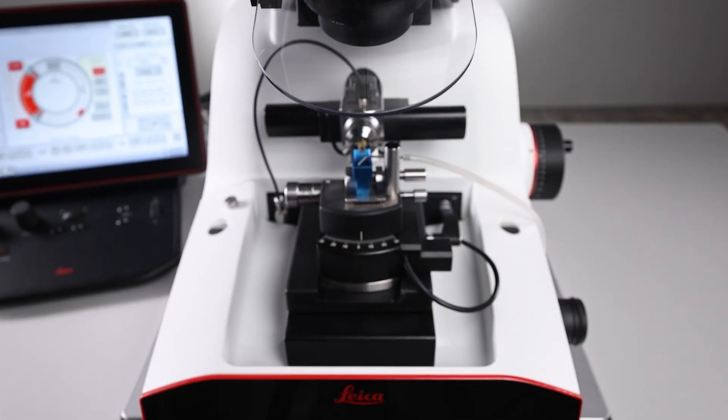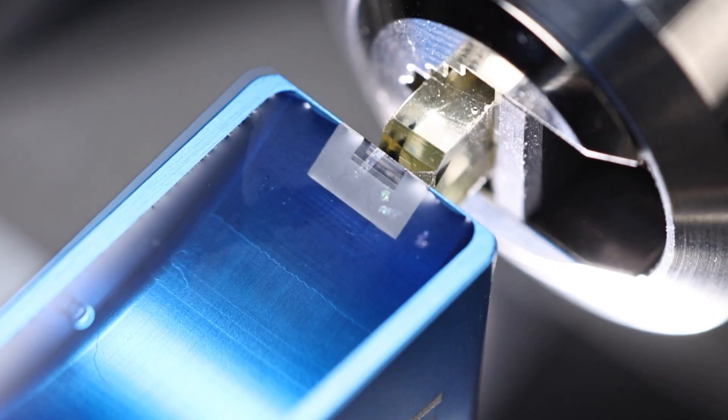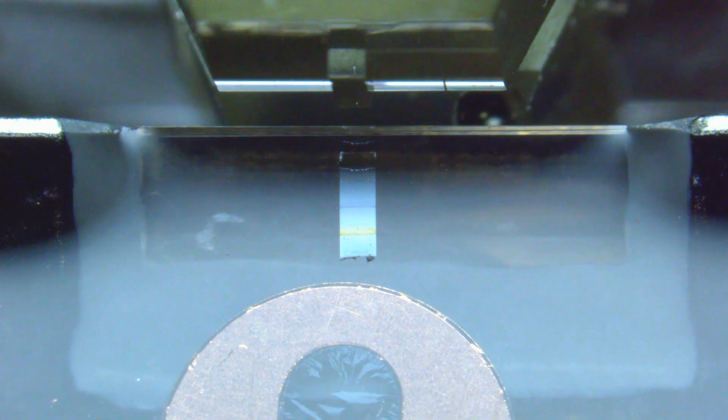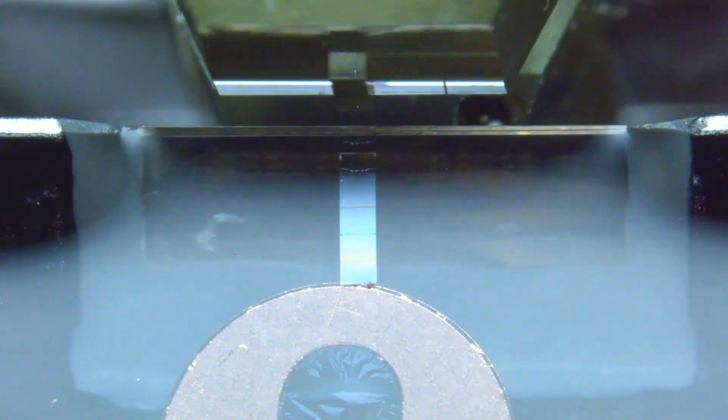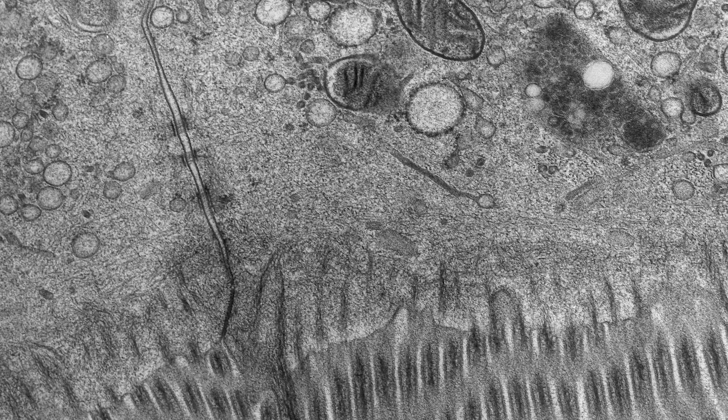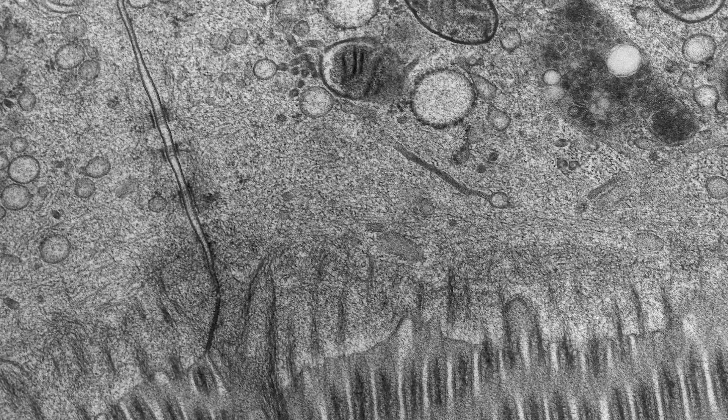But before we dive in, let's talk about what ultramicrotomy is. Ultramicrotomy is a specialized technique to cut very thin sections of various samples primarily used for electron microscopy analysis. These thin sections allow us to study the fine details of cells, viruses, and materials at high magnifications.